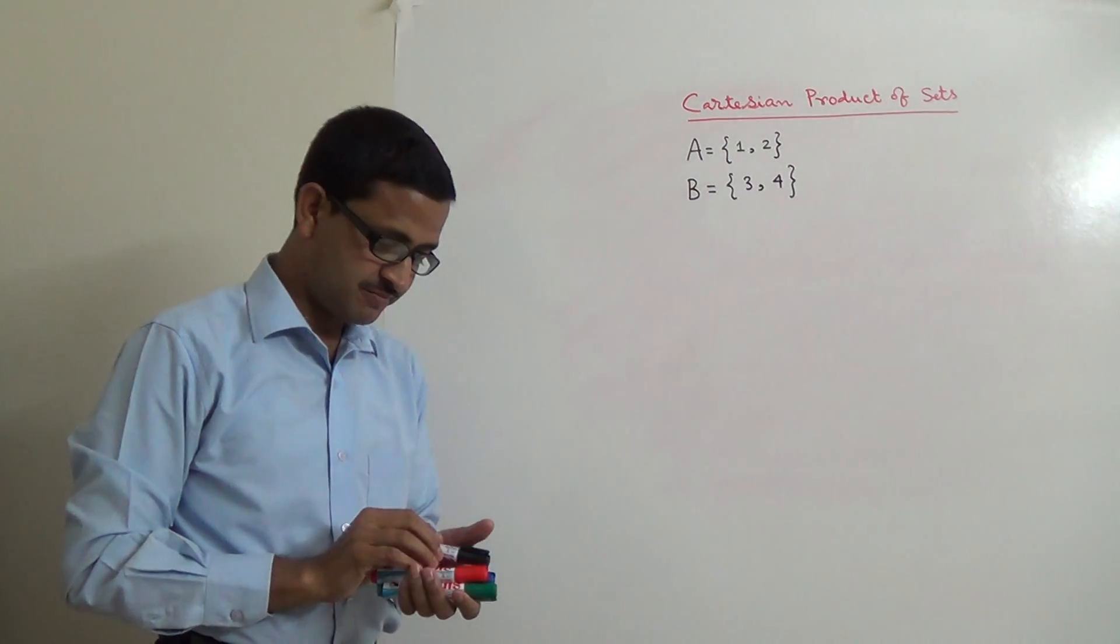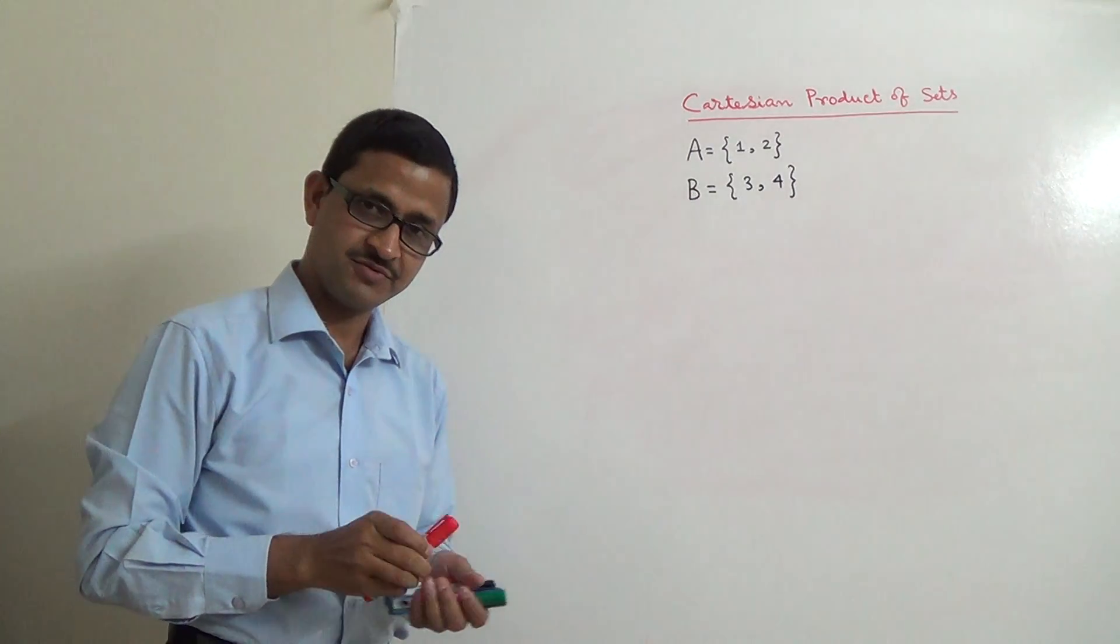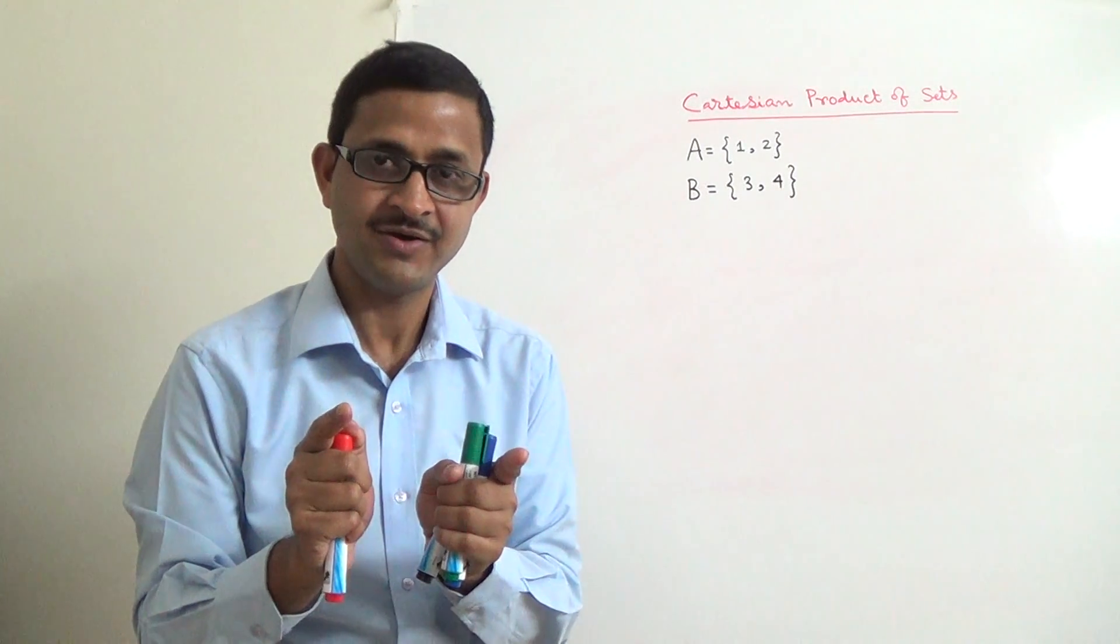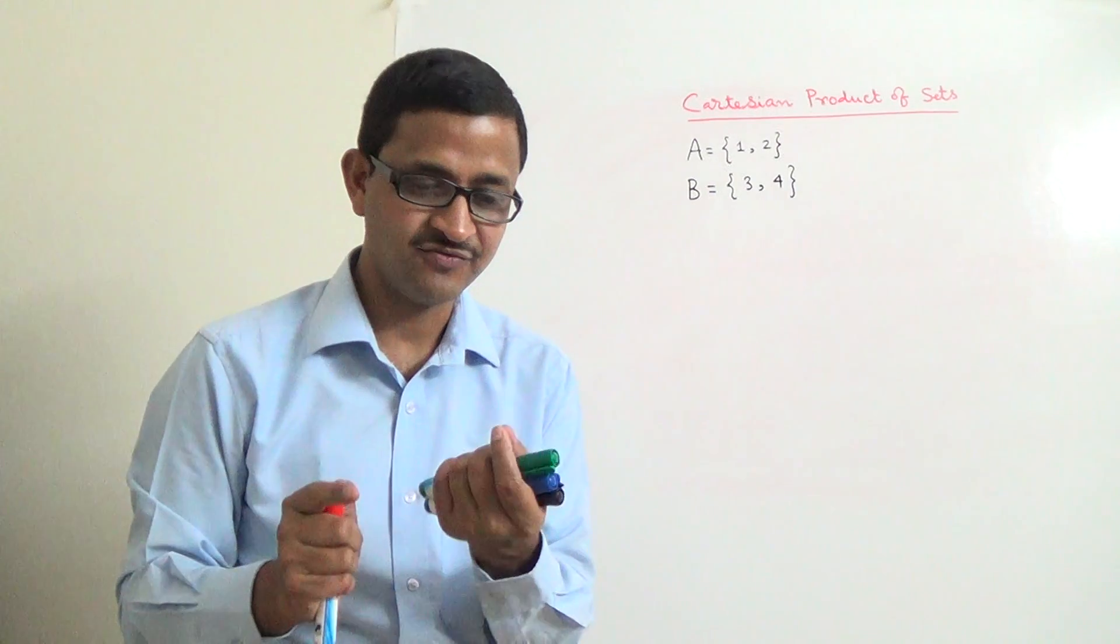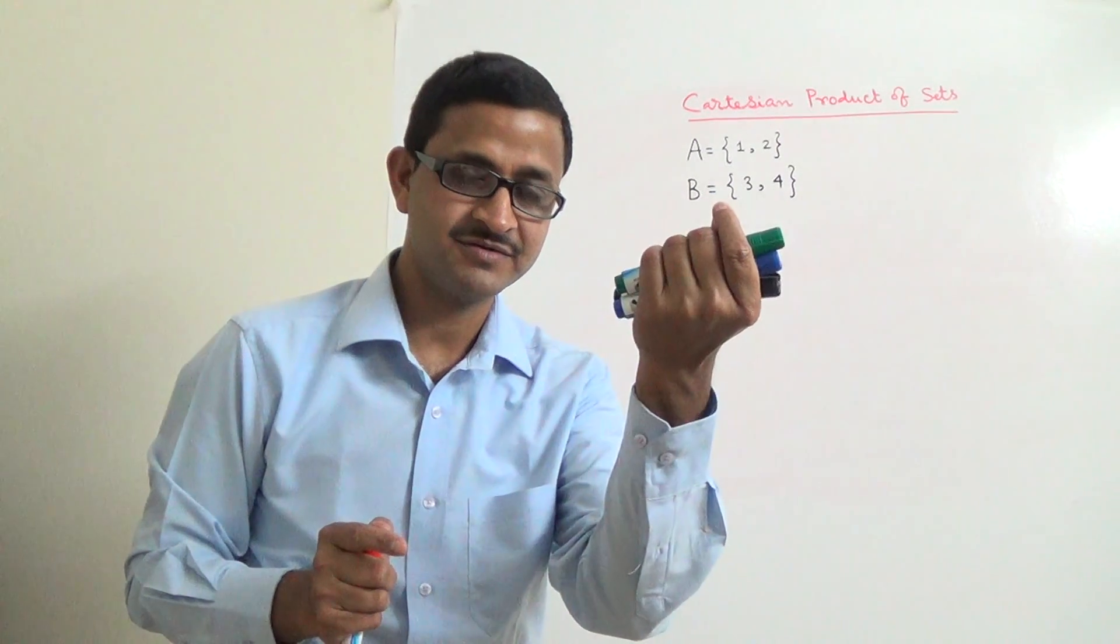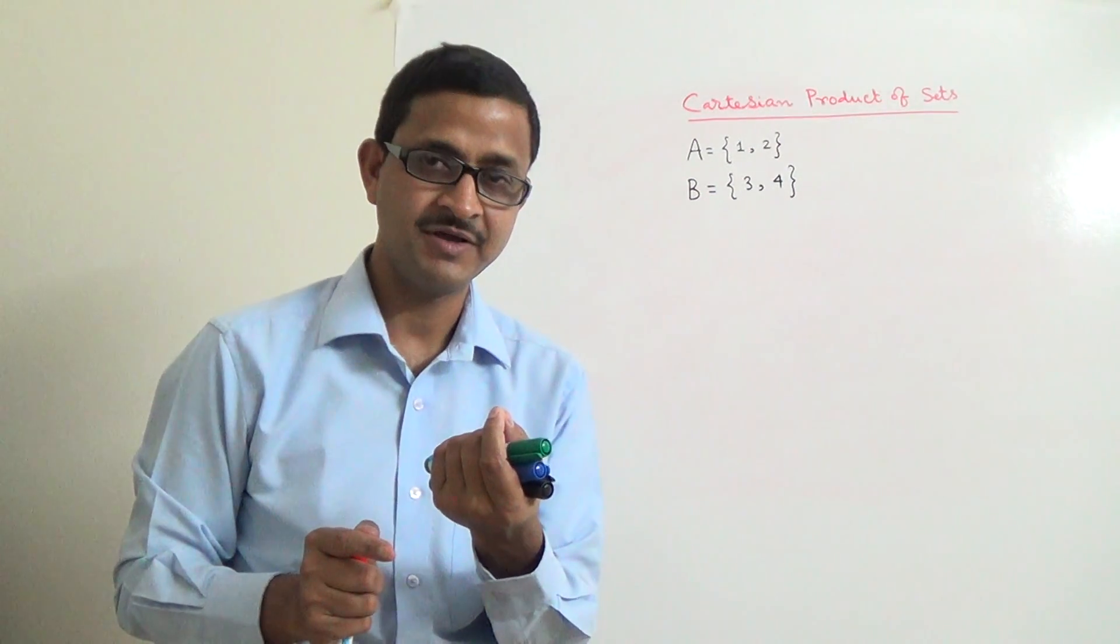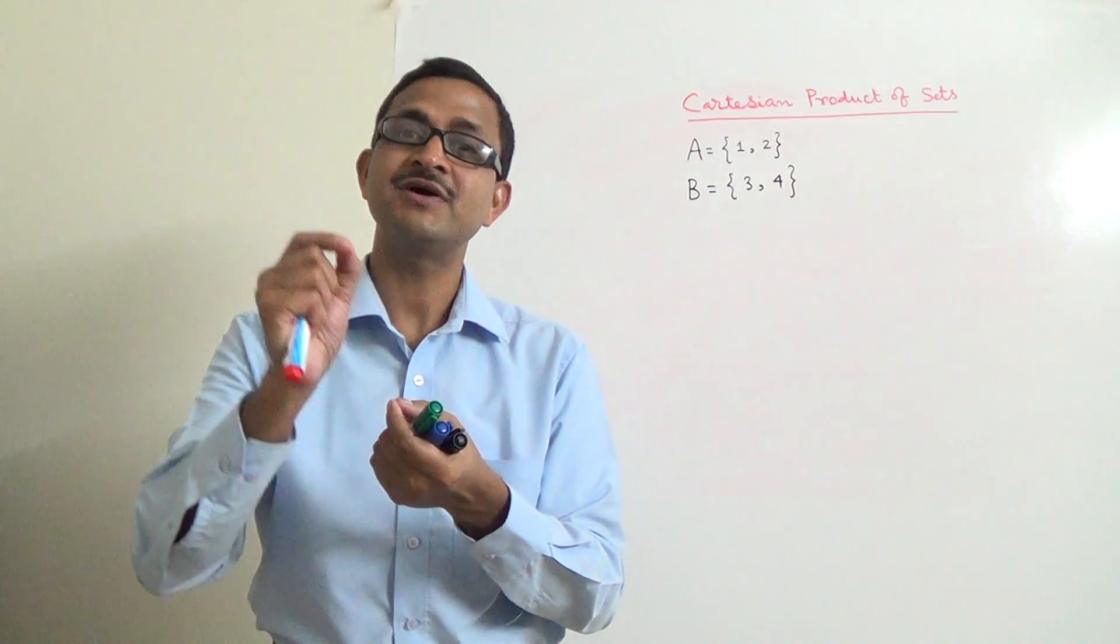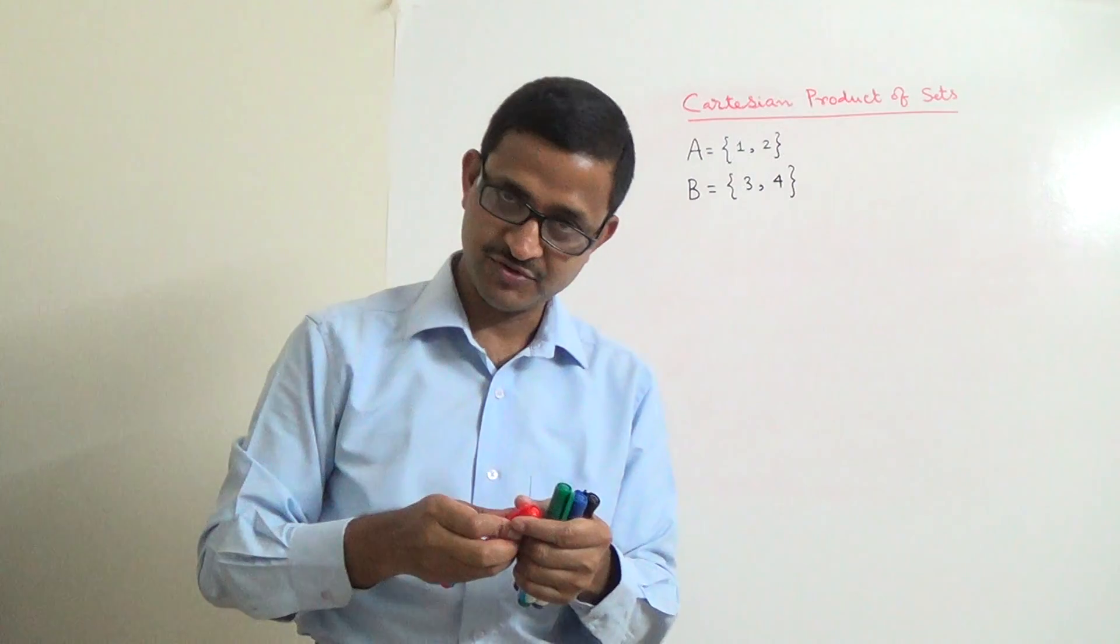The Cartesian product of these two sets A and B is nothing but an ordered pair. The first element belongs to the first set and the second element belongs to the second set.